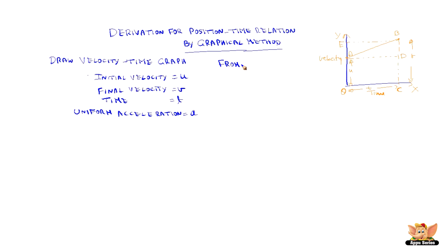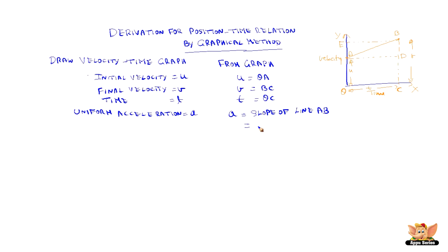From the graph we know that u is equal to OA and v is equal to BC, time taken is OC, and the acceleration a is equal to the slope of the line AB, which means it is BD divided by AD, which is BD divided by OC, since AD is equal to OC.